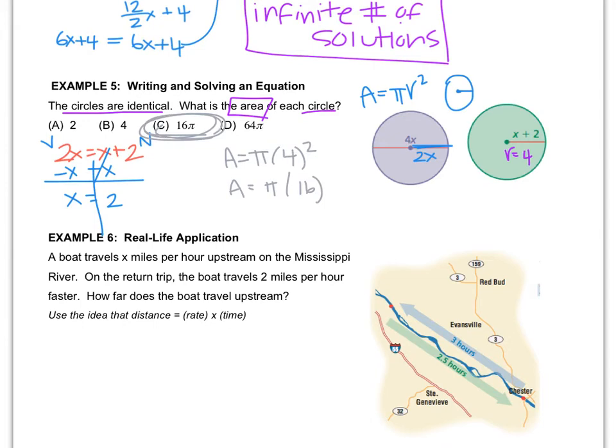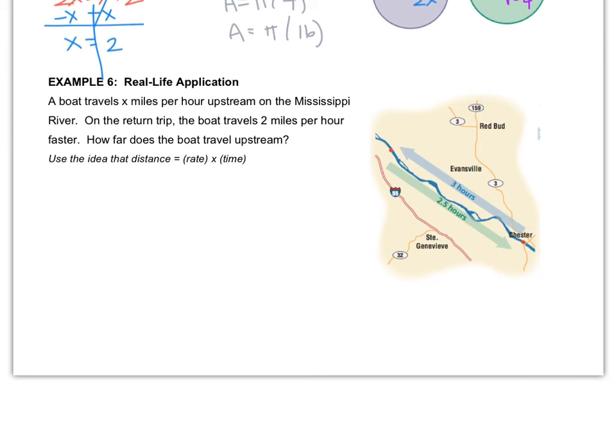Let's do another word problem together, Example 6. A boat travels x miles per hour upstream on the Mississippi River. On the return trip, the boat travels 2 miles per hour faster. How far does the boat travel upstream? You might not have any idea how to start, so they've given us a hint: use the idea that distance equals rate times time, because they tell us it's speed and they also tell us the time in the story—3 hours and 2 hours.